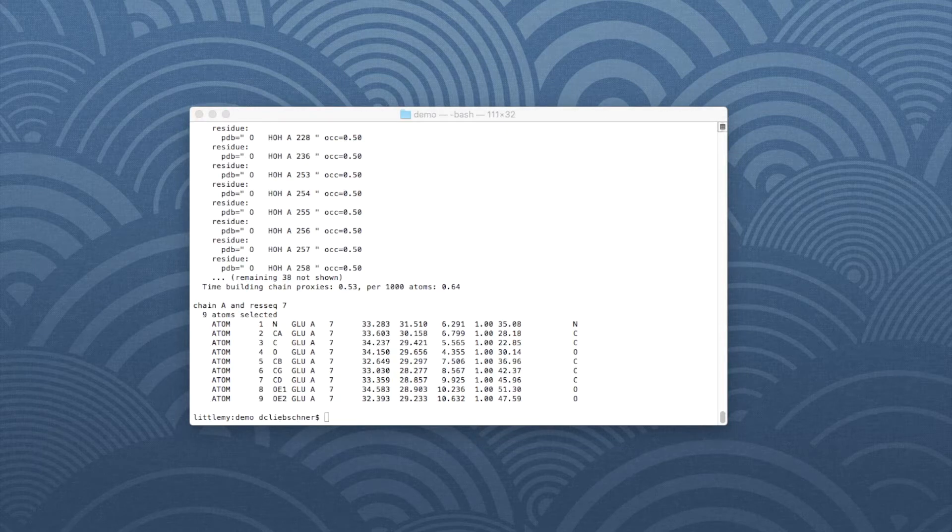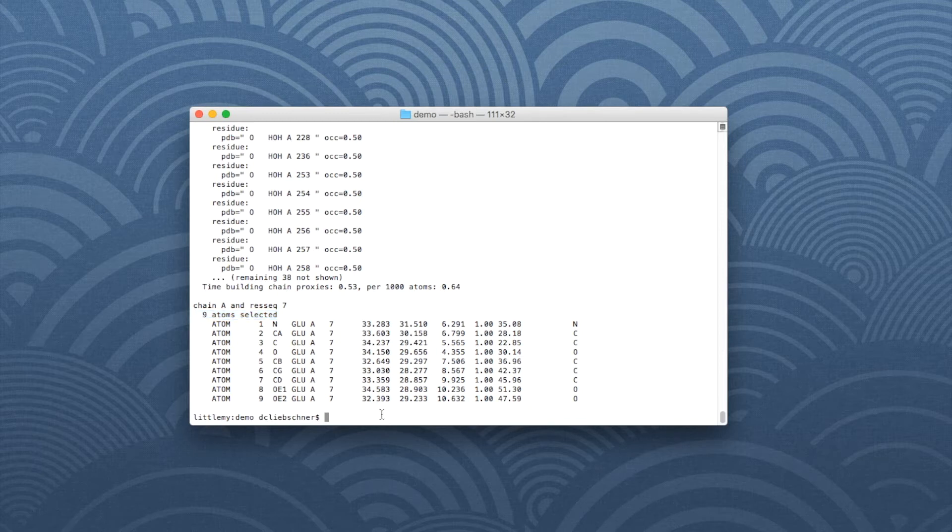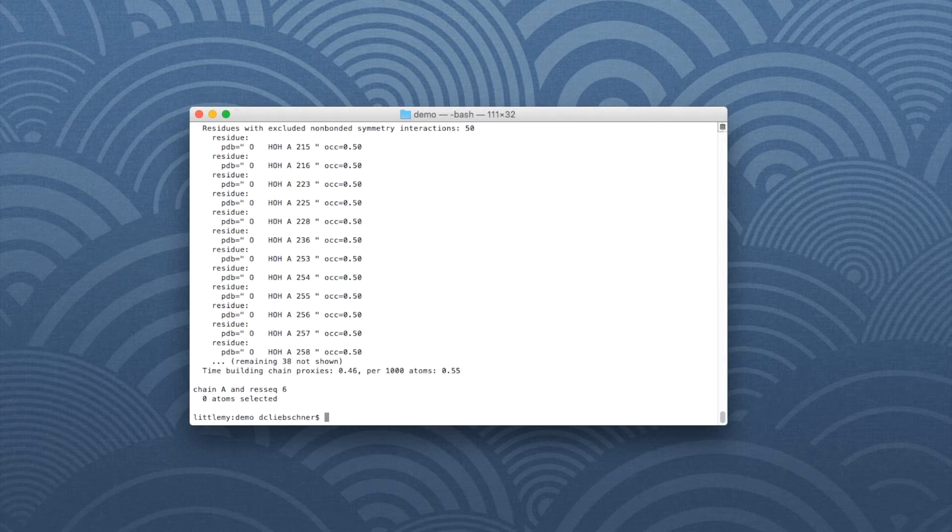At the end of the standard output is a PDB string of the selection and the total number of atoms selected. In our case, 9 atoms for residue number 7. Let's try residue number 6. This yields an empty selection because the residue is not present in the model.